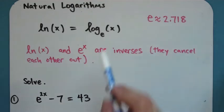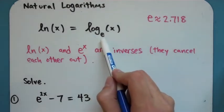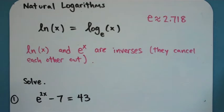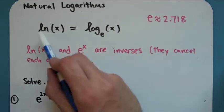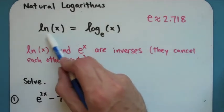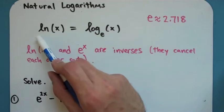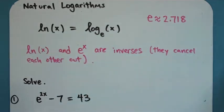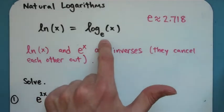It turns out that log base e is so important they gave it its own symbol. It's an ln, this stands for natural log. So when you see ln that is a log base e that we're having down there.